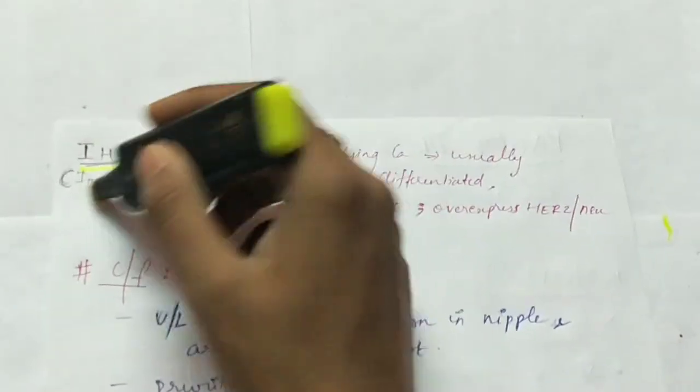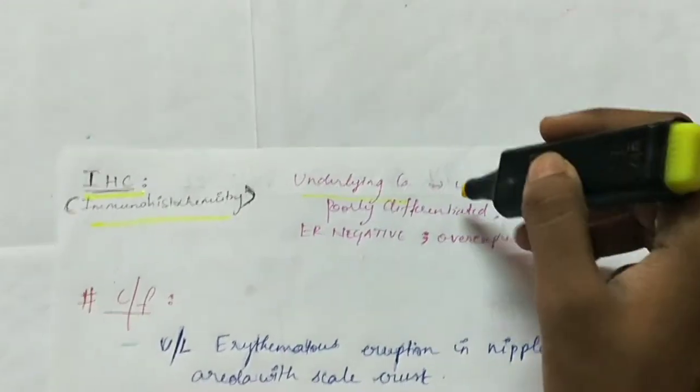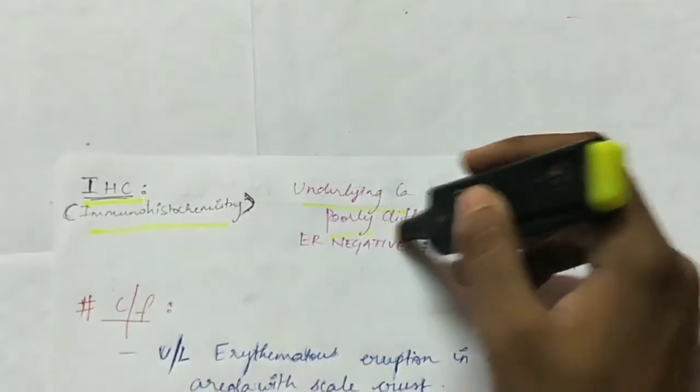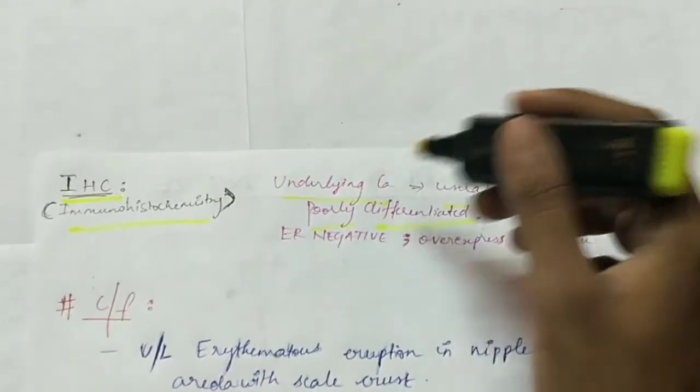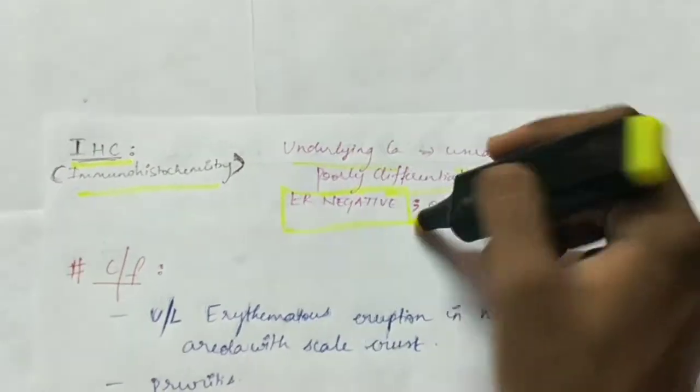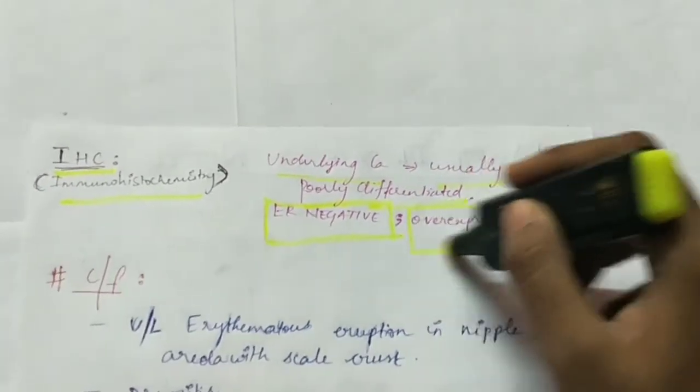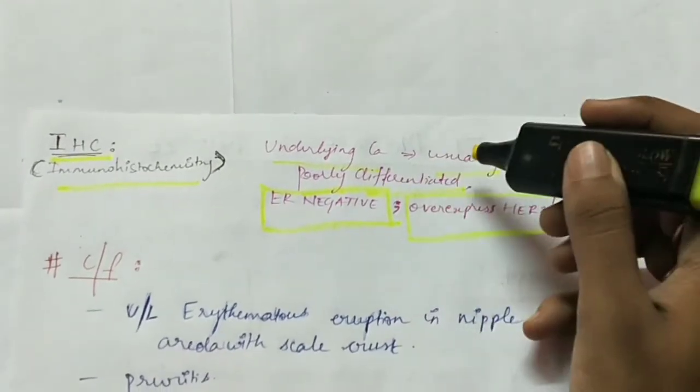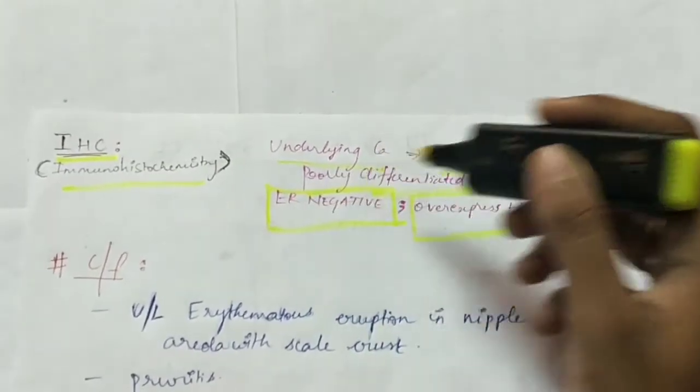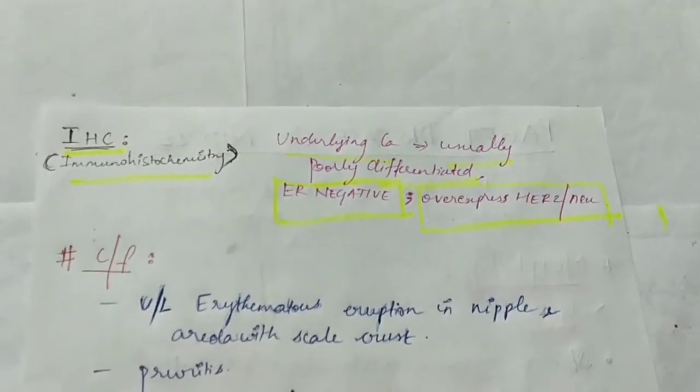The immunohistochemistry shows underlying carcinoma which is usually poorly differentiated. So the underlying ductal carcinoma is usually ER negative and HER2 positive. ER is estrogen receptor.